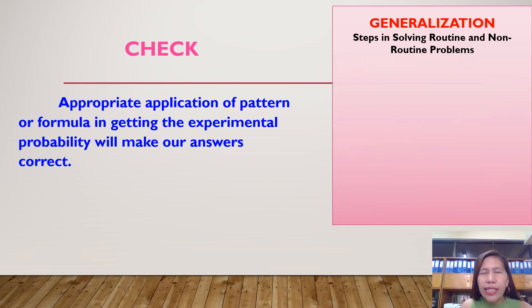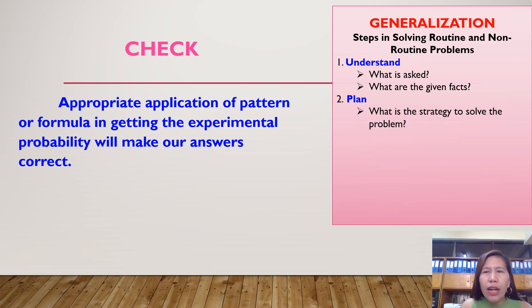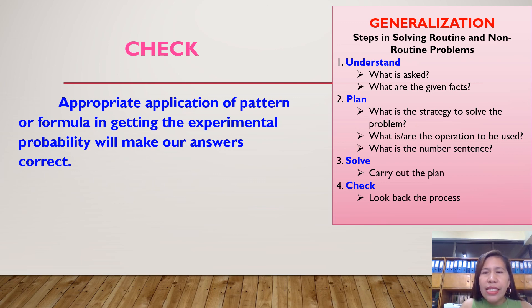As our generalization for today, we have here steps in solving routine and non-routine problems. First is, we're going to understand the problem. Under understanding, we should know what is asked in the problem, what are the given facts in the problem. After that, we're going to plan. Under planning, we should know what are the strategy or what is the strategy that we're going to use to solve the problem. Then, what operation or operations that we're going to use in the problem and what is the number sentence. If we have already a plan, then we can solve the problem or we can carry out the plan. If we have already the solution to our problem, then next is, we can check or look back the process, whether our answer is correct or reasonable. These are the things that we should remember in solving routine and non-routine problems.